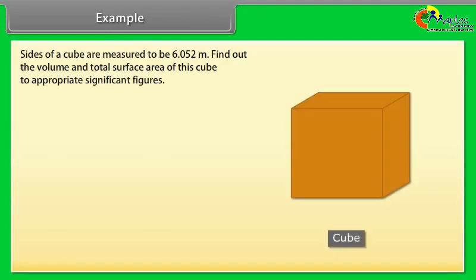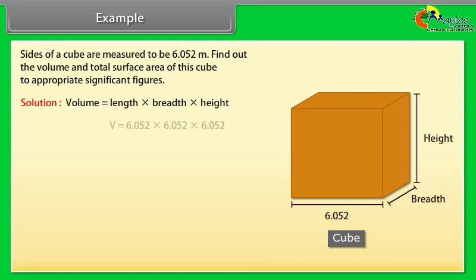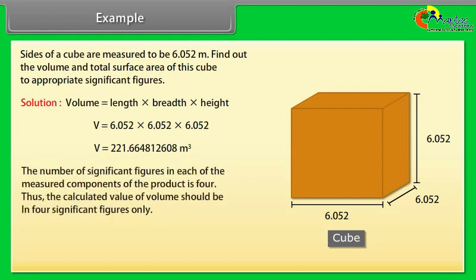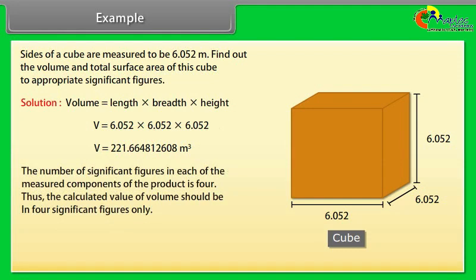Example: let us take an example of significant figure. Sides of a cube are measured to be 6.052 meter. Find out the volume and total surface area of this cube to appropriate significant figures. Let us see the solution. Volume is equal to length into breadth into height. After calculation we get V is equal to 221.665 meter cube. The number of significant figures in each of the measured components of the product is 4.